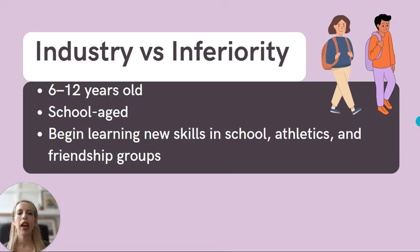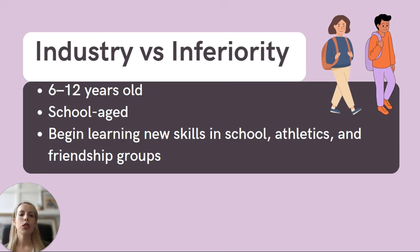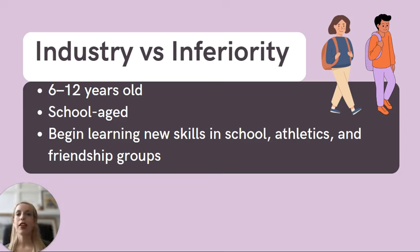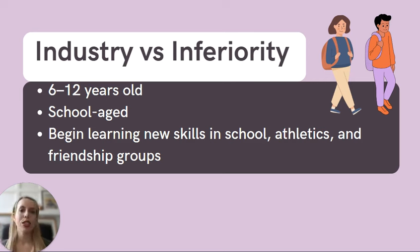Then we have industry versus inferiority. This stage spans from about six to twelve years old, so think school-age children. Most children are stepping outside of the home and into school and other social settings like sports and friendship groups, where they're going to be learning new skills and developing confidence in their abilities.